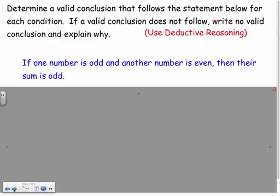All right, let's use deductive reasoning here. It says, determine a valid conclusion that follows the statement below for each condition. If a valid conclusion does not follow, write no valid conclusion and explain why. And we're going to use deductive reasoning. So deductive reasoning basically says, if the if is true,